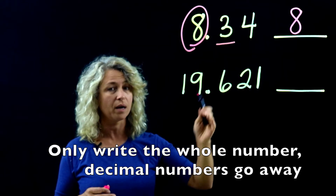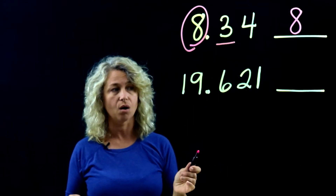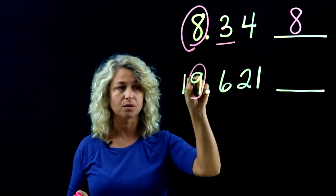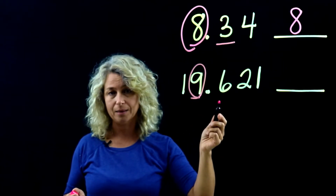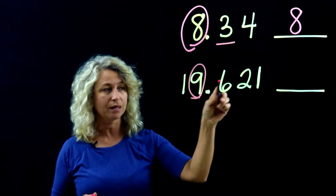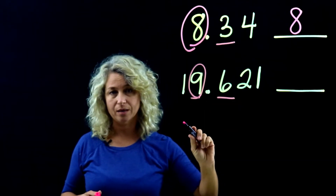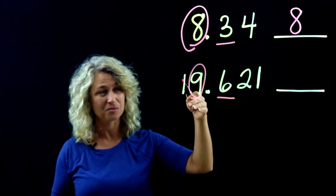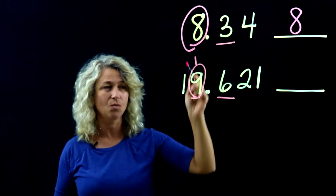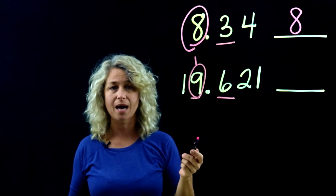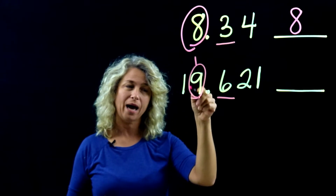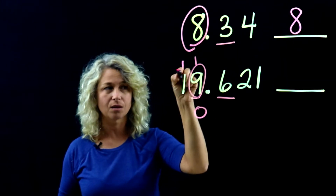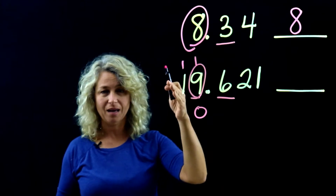Next example: 19 and 621 thousandths rounded to the nearest whole. The digit in the ones place is 9 — circle it and underline the 6 next to it. Remember: 5 or more adds 1. So we're adding 1 to the 9 — put your 0 down and carry over the 1.